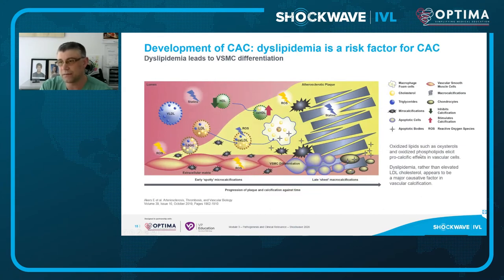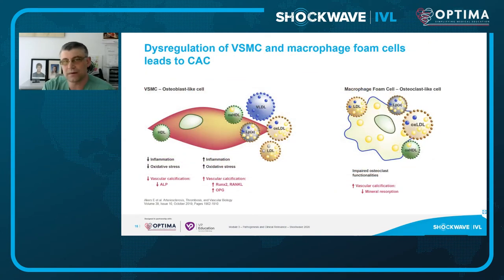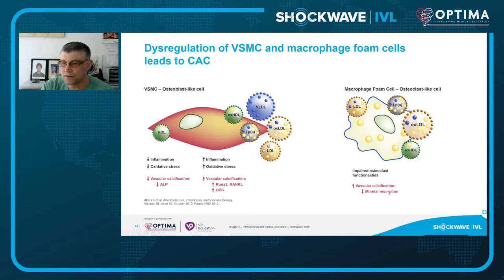Oxidized lipids elicit pro-calcific effects in vascular cells. It's not only high LDL levels, but dyslipidemia itself that is a causative factor in vascular calcification. There is a disbalance between vascular smooth muscle cells — osteoblast-like cells causing mineralization — and macrophages, which are defective in later stages of atherosclerosis, leading to less resorption of mineralization. This disbalance is exaggerated during disease progression, explaining increasing vascular calcification.